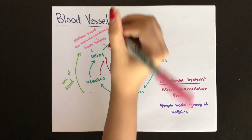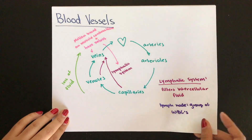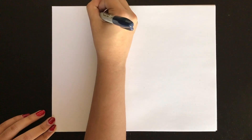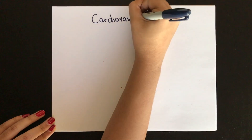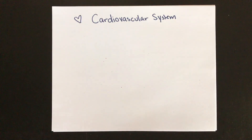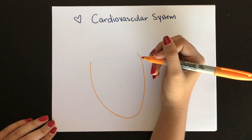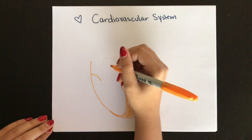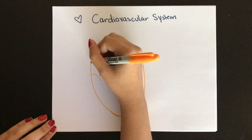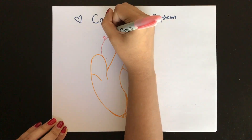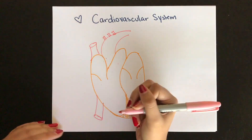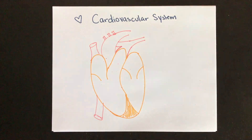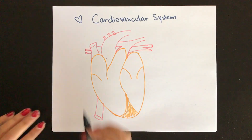Next we're going to talk about the human heart. The heart pumps in two circuits simultaneously: the pulmonary circuit, where blood goes to the lungs and back to the heart, and the systemic circuit, where blood goes from the heart to the body and back.